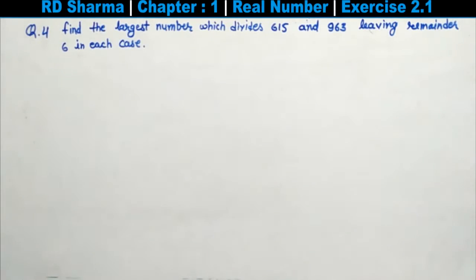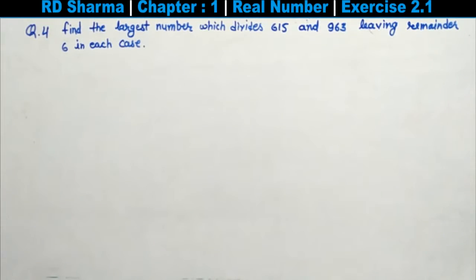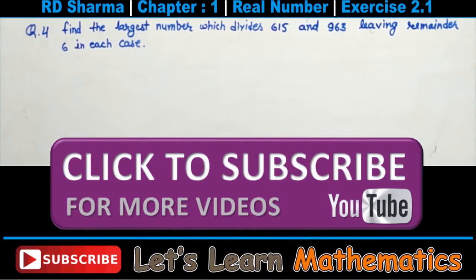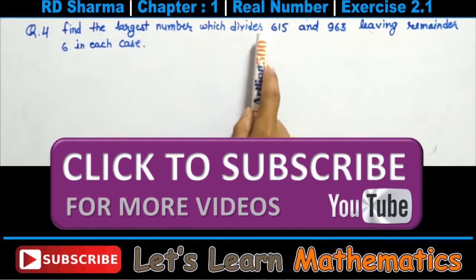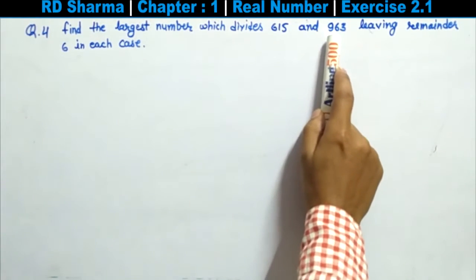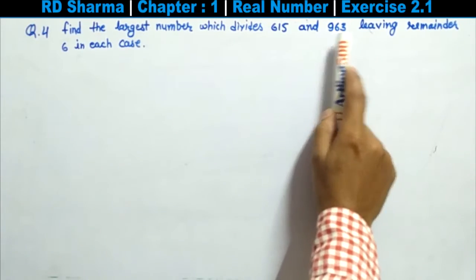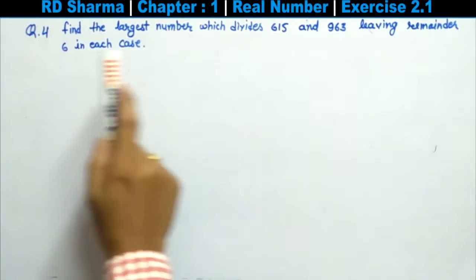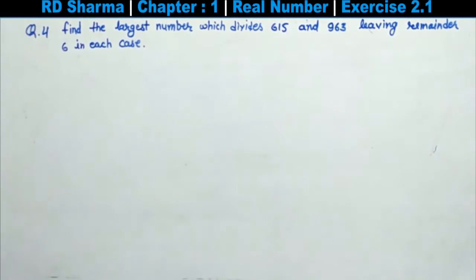Hello friends, I am Dinesh with another question from R.D. Sharma Chapter No. 1, Real Numbers, Exercise 1.2, Question No. 4: Find the largest number which divides 615 and 963 leaving remainder 6 in each case.